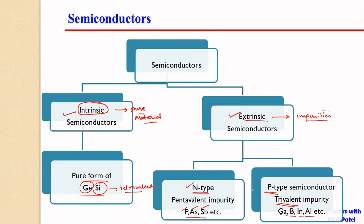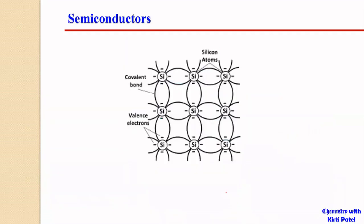Examples of trivalent impurities include gallium, boron, indium, or aluminum. Both P-type and N-type semiconductors are utilized in many different materials such as diodes and other semiconductor devices. These are prepared by using N-type and P-type semiconductors.